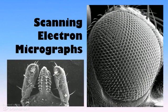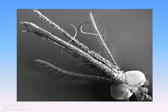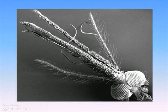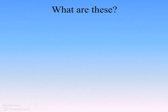Pretty cool. These are the mouth parts of a tick. This is the head of a male mosquito — you can tell it's a male because the mouth parts are all furry. Here's a couple for you to guess on — what do you think these are?